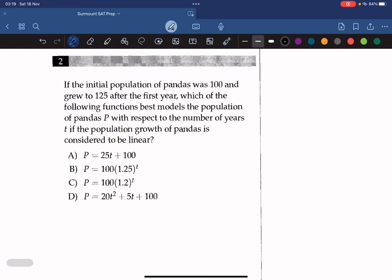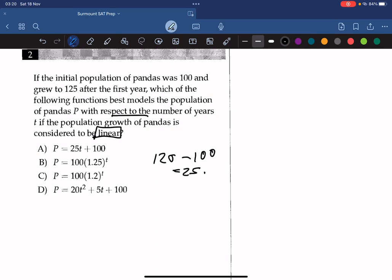Alright, question 2. If the initial population of pandas was 100 and grew to 125 after the first year, which of the following functions best models the population of pandas P with respect to the number of years T if the population growth for pandas is considered to be linear? The constant increase is 125, and you have to subtract it by the initial, which will give us 25. Therefore, the slope must be 25, and the y-intercept is 100 because the initial is 100. Since it's 25 and 100, it must be a linear equation, so it's 25T plus 100, so the answer must be A.